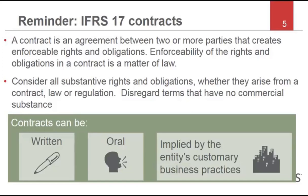Contracts can be written, oral, or implied by an entity's customary business practice. The practices and processes for establishing contracts with customers vary across legal jurisdictions, industries, and entities. In addition, they may vary within an entity — for example, they may depend on the class of customer or the nature of the promised goods or services.